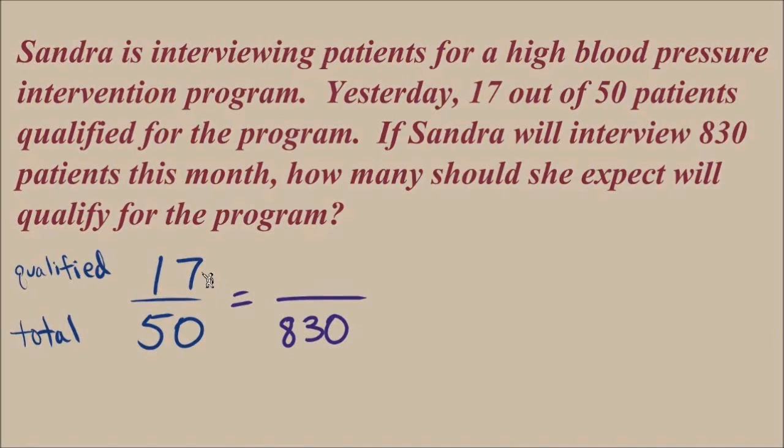We must have a number that represents how many patients qualify in the numerator and the total number of patients in the denominator. So in this case, if one ratio is 17 over 50, the other one must be x over 830 using x for how many patients will qualify out of this larger group of 830.